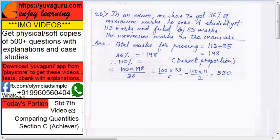In an exam, one has to get 36% of the maximum marks to pass. Means, if 100 are the total marks, you have to get 36. A student got 113 marks and failed by 85.